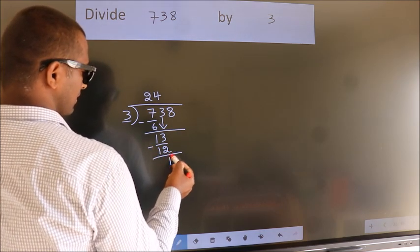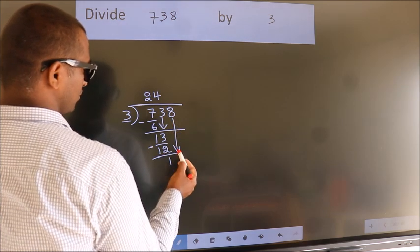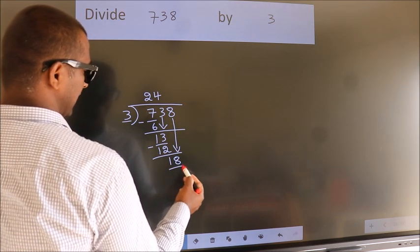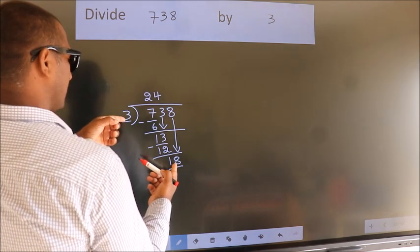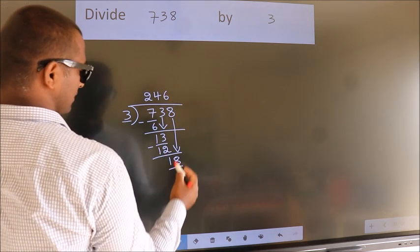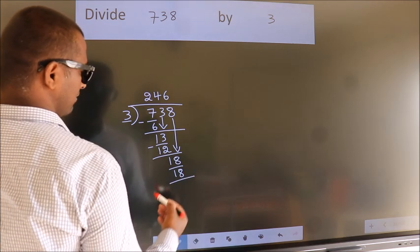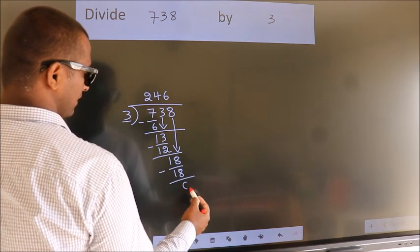After this, bring down the next number. 8 comes down, so we have 18. When do we get 18 in the 3 table? 3 times 6 is 18. Now we subtract and get 0.